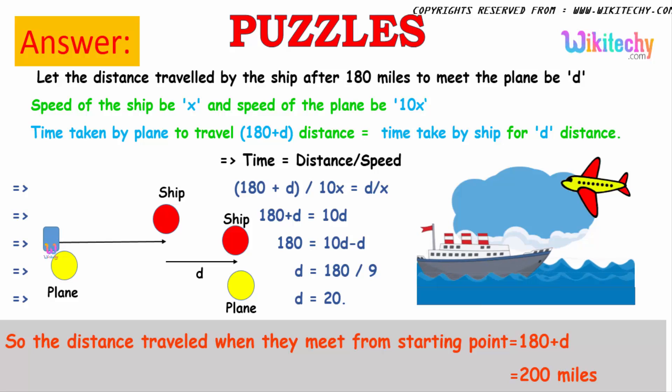So my question is, I got the seashore here with a plane and ship here. It's almost 180 miles. The ship is traveling a distance of d, meantime the plane is traveling 180 plus d distance.